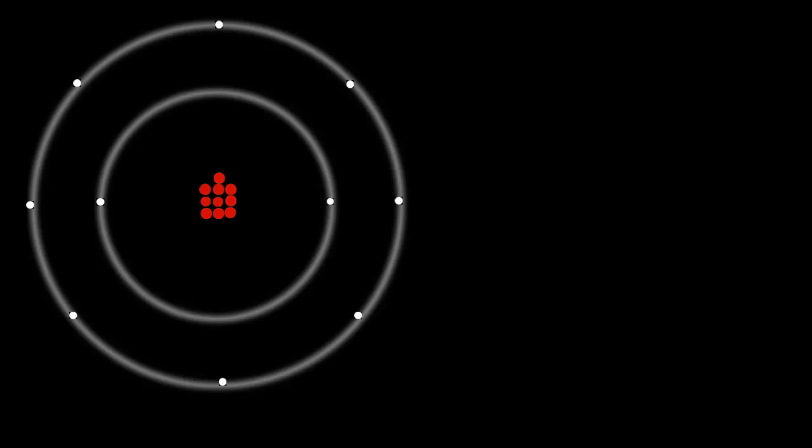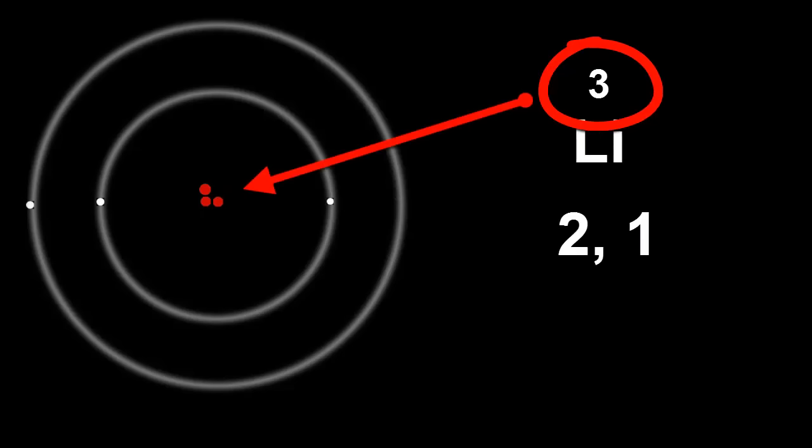We've just built atoms of the first ten elements on the periodic table. Each one has a different number of protons and electrons, and a different electron configuration, too.